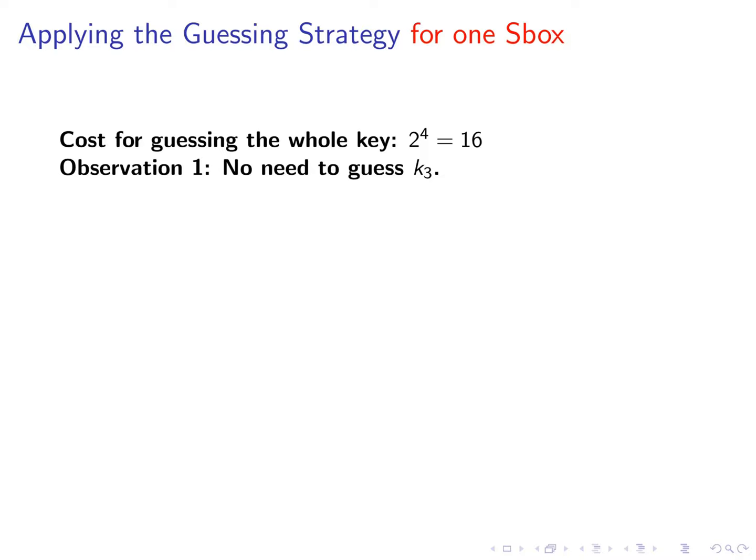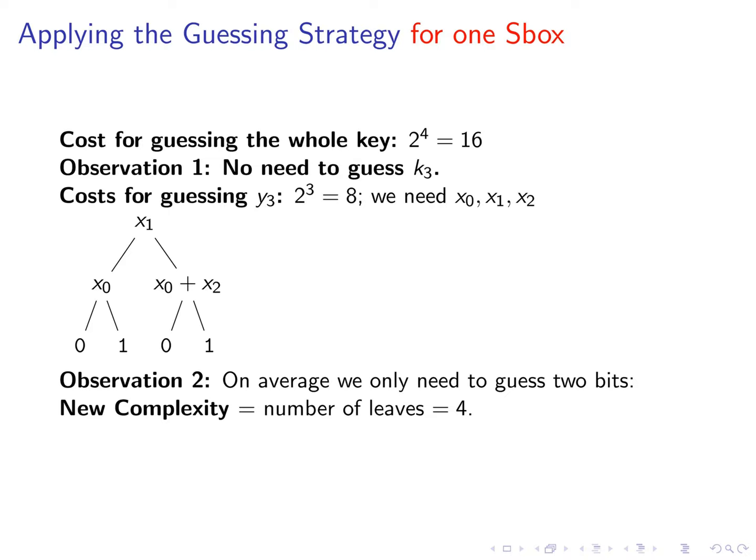Going back to our example. Naively we would have had to guess 4 bits. So in total we would have had to perform 16 guesses. After observation 1 we know that the function is independent of one key bit. Therefore we only need to guess 3 key bits. Thus we actually only have to do 8 guesses. Looking at the tree we see that no matter what input we get we only have to guess 2 bits. Therefore we only have to do 4 guesses. We show in the paper that this is equal to the number of leaves even for more complicated trees that might be unbalanced. Applying both observations we have reduced the number of necessary key guesses by a factor of 4.